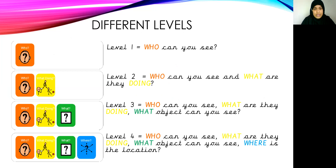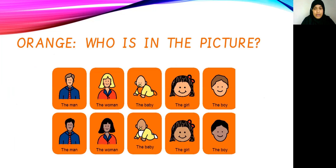Here is a recap of the levels. Level 1: who can you see? Level 2: who can you see and what are they doing? Level 3: who can you see, what are they doing, and what object can you see? Level 4: who can you see, what are they doing, what object can you see, and where is the location? This is a small key to help you with the different levels of your sentence build-up. For orange, who is in the picture?